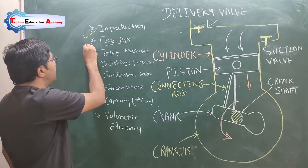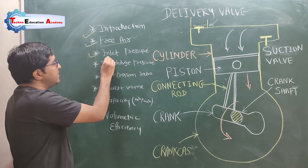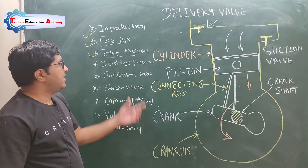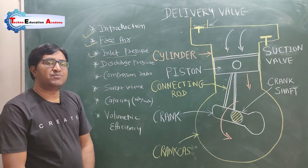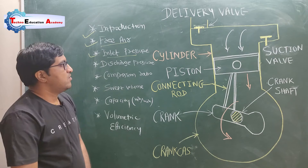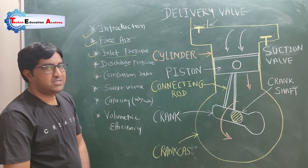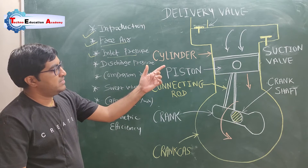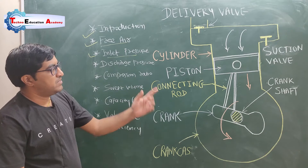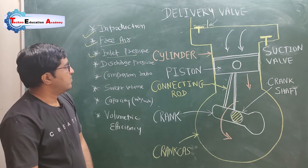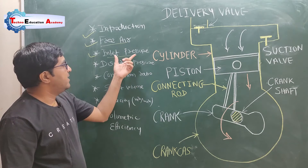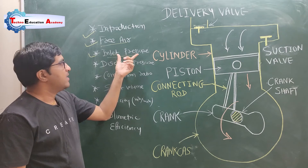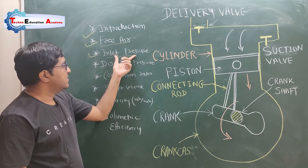The second term is inlet pressure. Inlet pressure is the absolute pressure of air at which the air will enter into the compressor from the suction valve. It is called inlet pressure — the absolute pressure of air at which it will enter into the cylinder.